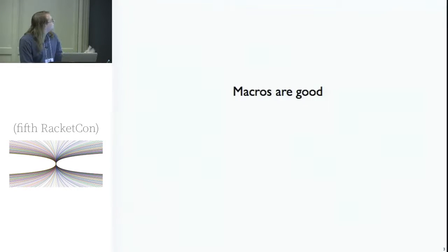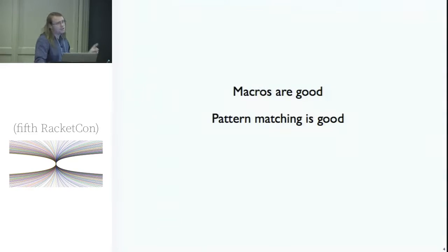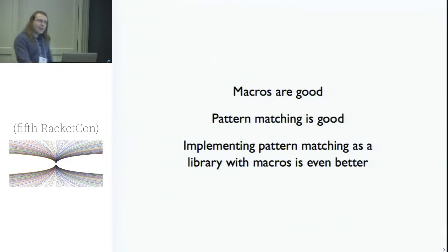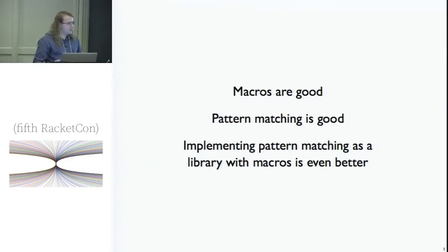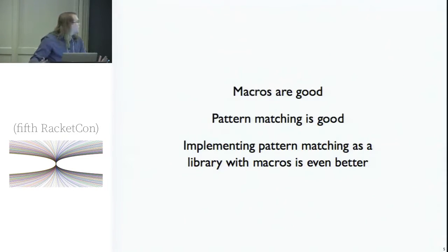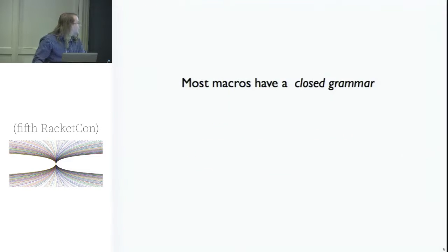Macros are really nice. Pattern matching is also really nice. In Racket, pattern matching is implemented as a library with macros — it does a whole bunch of nice analysis, figures out when you do branches that interleave, makes sure you only check things once, and does all the binding and expansion you need.